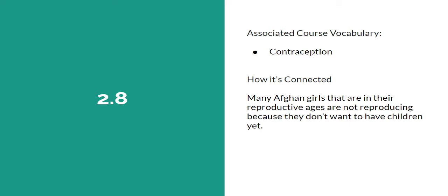I also have Topic 2.8. The associated course vocabulary is contraception. How this is connected is that many Afghans who are in their reproductive ages are not reproducing because they do not want to have children yet, or are unable to have children because of the poor healthcare systems in the makeshift camps.